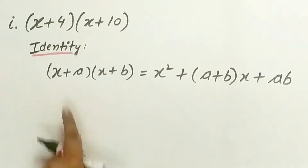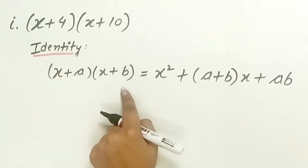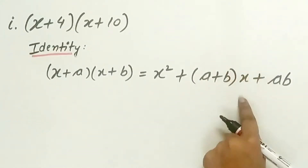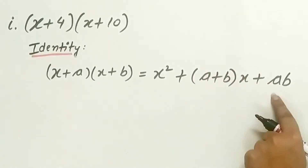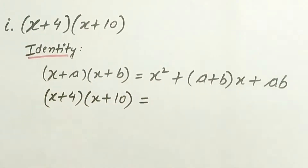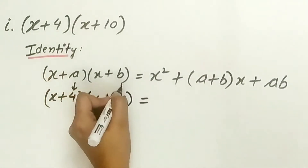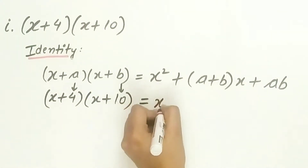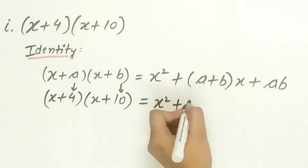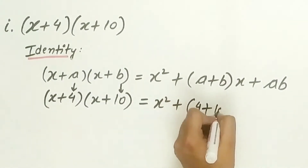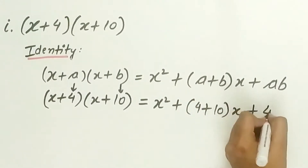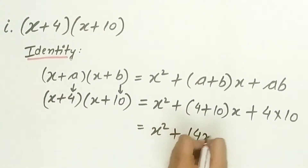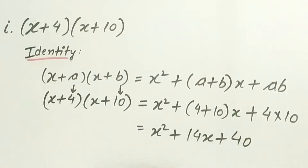We will use the identity: (x + a)(x + b) = x² + (a + b)x + ab. Here, a is 4 and b is 10. Substituting the values: x² + (4 + 10)x + (4 × 10) = x² + 14x + 40.